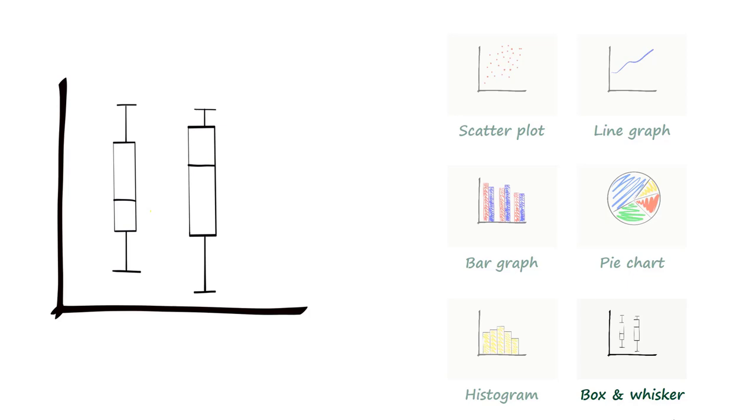It shows a five number summary: the minimum, the first quartile, the median, the third quartile and the maximum. The box shows the interquartile range between the first quartile and the third quartile, with the bars representing the range of data. Sometimes you can include outlier points as dots.